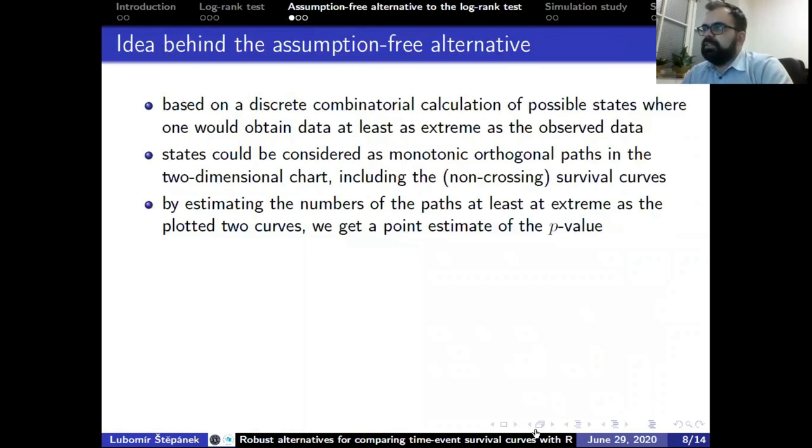The assumption-free alternative is based on a discrete combinatorial calculation of possible states, where one will obtain data at least as extreme as the observed data. States could be considered as monotonic orthogonal paths in the two-dimensional chart, including the non-crossing survival curves. By estimating the numbers of paths at least as extreme as the plotted two curves, we get a point estimate of the p-value.